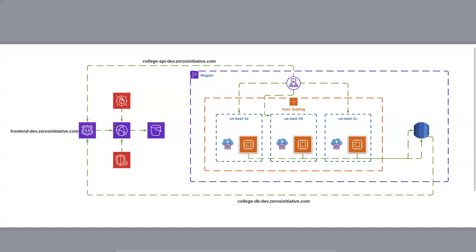Our Angular code will be built and deployed to an S3 bucket. From there, CloudFront sits in front of it to retrieve all objects, giving us low-latency global deployment to all edge locations. To protect the application we'll have a Web Application Firewall, and by default CloudFront includes Shield Standard, providing DDoS mitigation. We'll register our domain name in Route 53 pointing to CloudFront, and the frontend domain name will be frontend-dev.zerosinitiative.com.